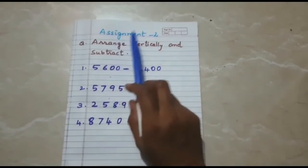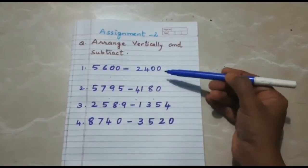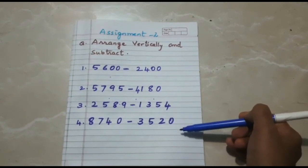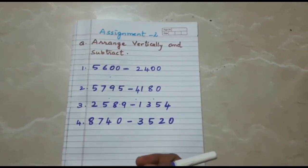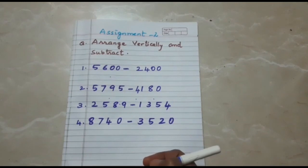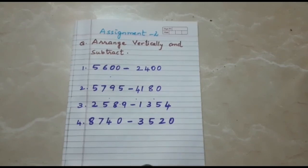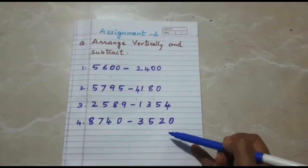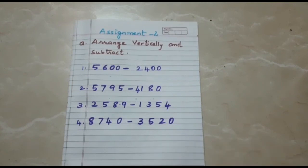Students, Assignment Number 2: arrange vertically and subtract. I have given 4 questions. Along with these 4 questions, the 2 questions of 4-digit number subtraction without borrowing that I just explained — those 2 and these 4 questions must be there in your notebook.